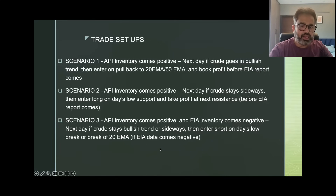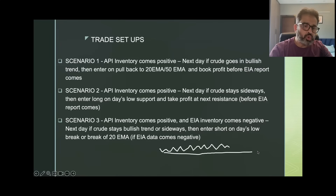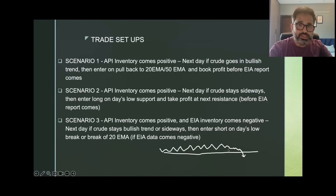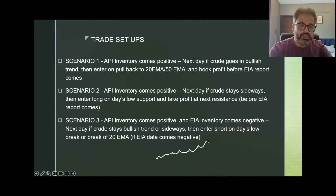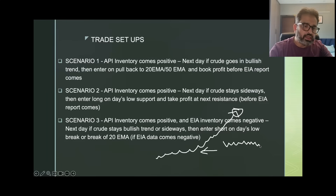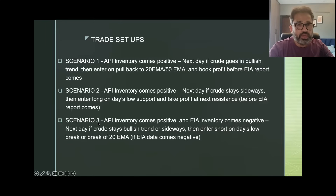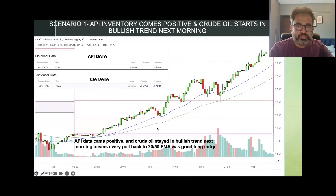Scenario three: API inventory comes positive but EIA inventory comes negative — both are opposite. If next day crude oil stays bullish or sideways, then enter short on the day's low break or a break of the 20 MA. Also note that many insiders already know what the EIA inventory is going to come — sometimes at 6:00 or 6:30 PM the market already starts rallying or falling, even before the 8 PM EIA announcement.